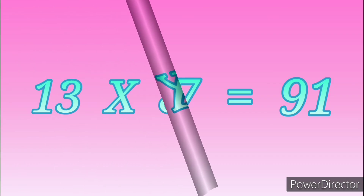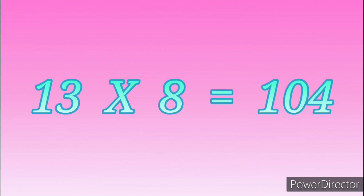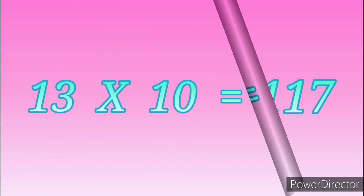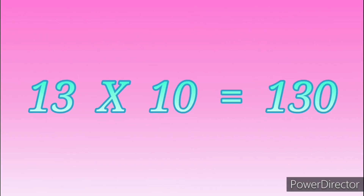Thirteen eights are one hundred and four. Thirteen nines are one hundred and seventeen. Thirteen tens are one hundred and thirty.